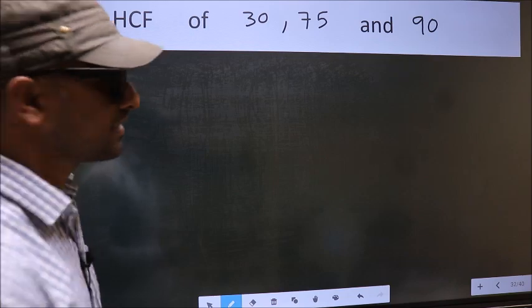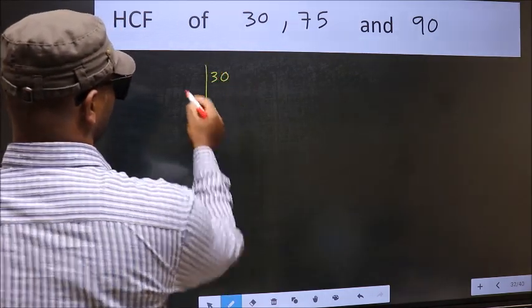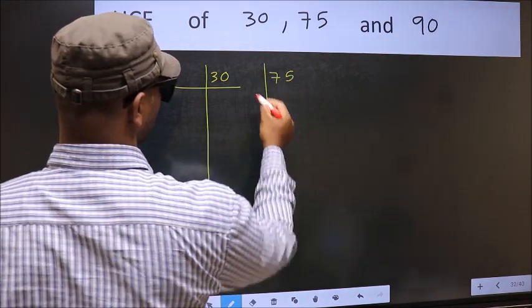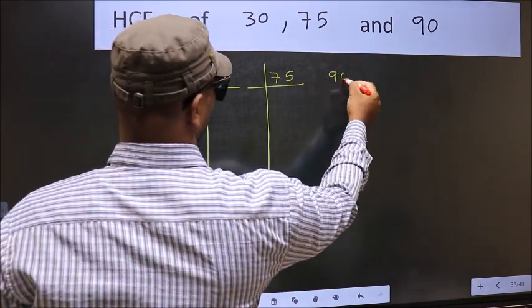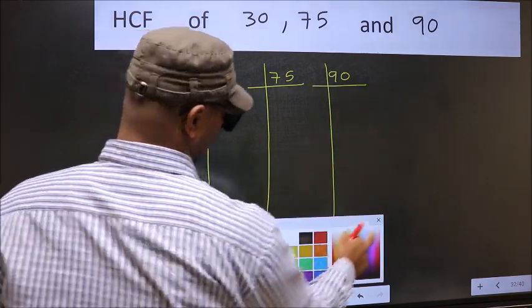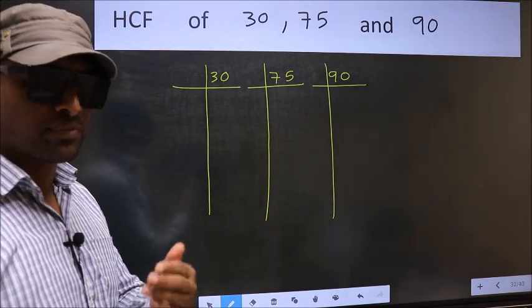What I mean is 30, 75, 90. This is your step 1. Next.